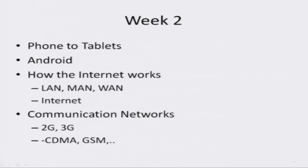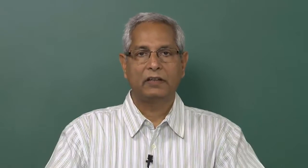So what do we have in Week 2? Week 2 has four sets of lectures. In the first set, I am going to talk about the various kinds of mobile access devices there are. We have simple phones — these are called feature phones or dumb phones. We have smart phones, phablets and tablets. There is a lecture talking about different aspects and properties of these devices.